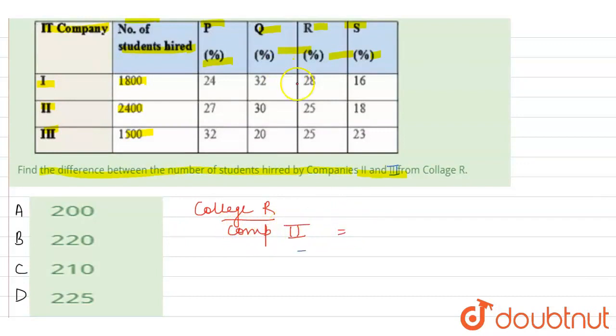Company 2, how much is the percentage of R? 25%. So 25% of 2400, that is 600.